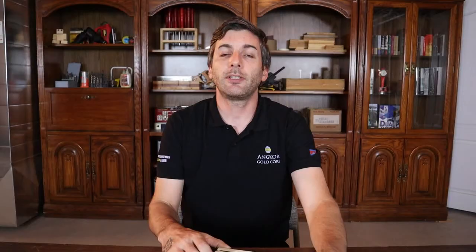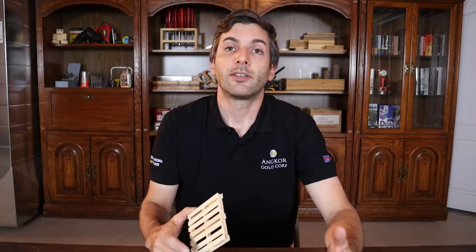So this popsicle stick pallet is going to be four inches by four inches, about half an inch tall, and it's going to use 16 popsicle sticks. All the instructions and dimensions will be in the description below. Don't forget to subscribe for a lot more really great content just like this. Now let's get into the build.